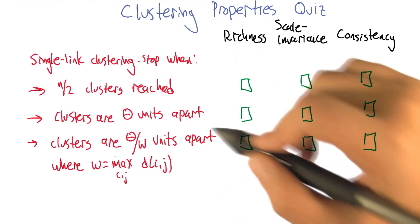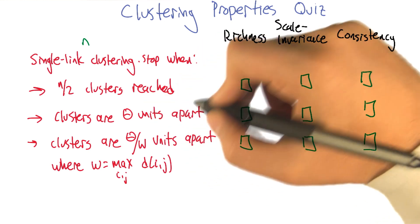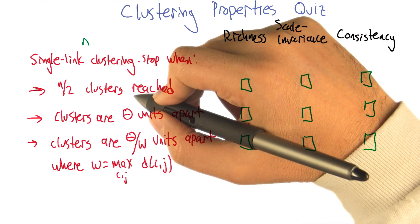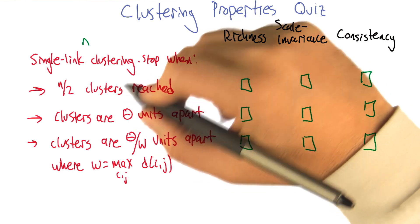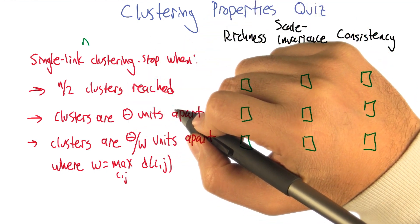So one is, we've got n items that we're clustering. I'm going to stop when I've got n over two clusters. So just keep merging, keep building clusters until you've reached n over two clusters. And at that point, stop and return what you've got. Does that make sense?